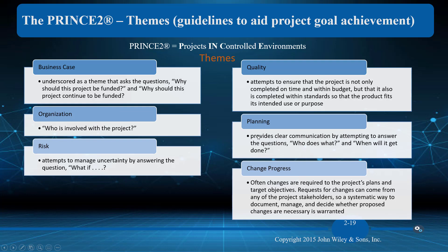Planning — clear communication — attempts to answer the questions: who does what, when will it be done? Who, what, where, when, how. I tend to say planning addresses how will it get done and who's going to do the work. You can see that these are intermingling.